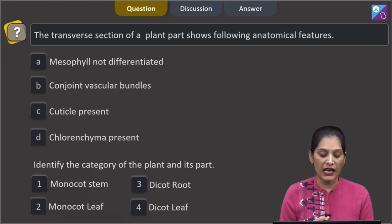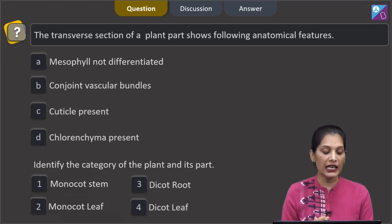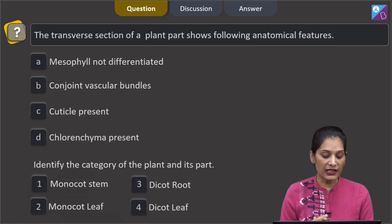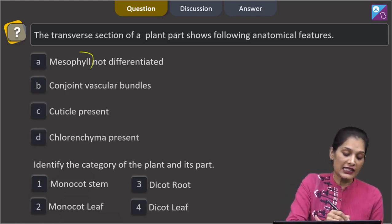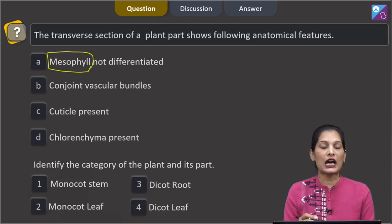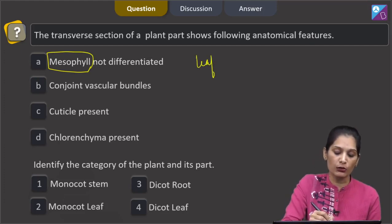Let us move to the next question. The transverse section of a plant part shows following anatomical features. A mesophyll not differentiated. B conjoint vascular bundles. C cuticle present. D chlorenchyma present. Identify the category of the plant and its part. In A itself, it is mentioned that mesophyll not differentiated. The ground tissue of leaf is called the mesophyll and you have got the clear hint that we are talking about the leaf.